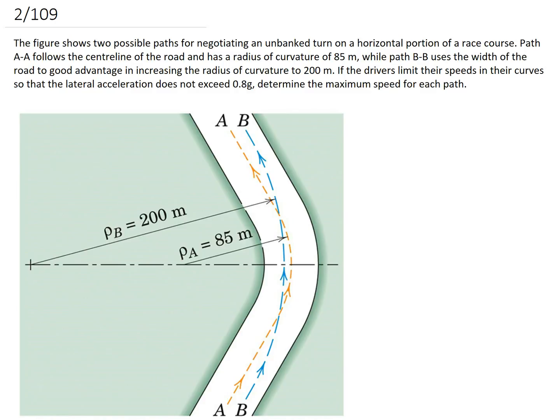This question is looking at the motion of two cars driving around a bend. The figure shows two possible paths for negotiating an unbanked turn on a horizontal portion of a race course.